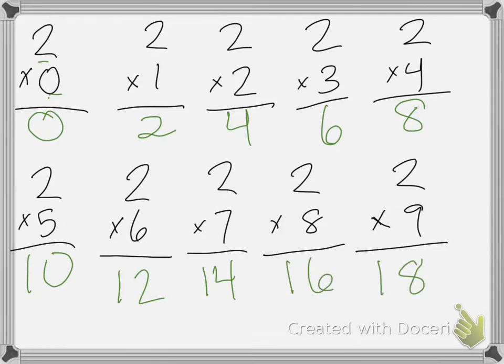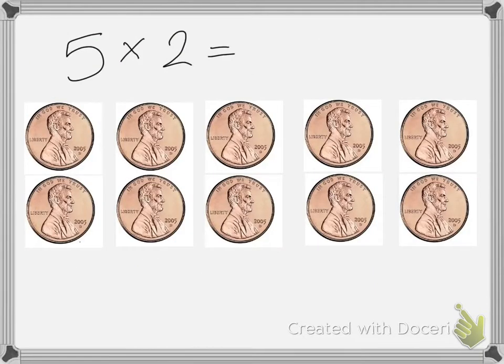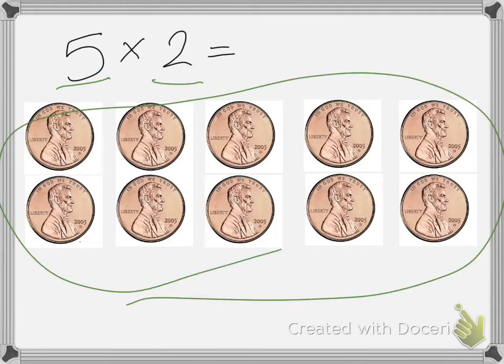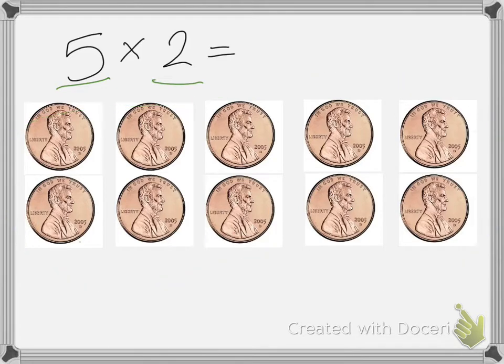The numbers we multiply are called factors. If I have 5 times 2, that's asking for 5 groups of 2 pennies, which is what I've shown here. I can see that I have a total of 10 pennies.